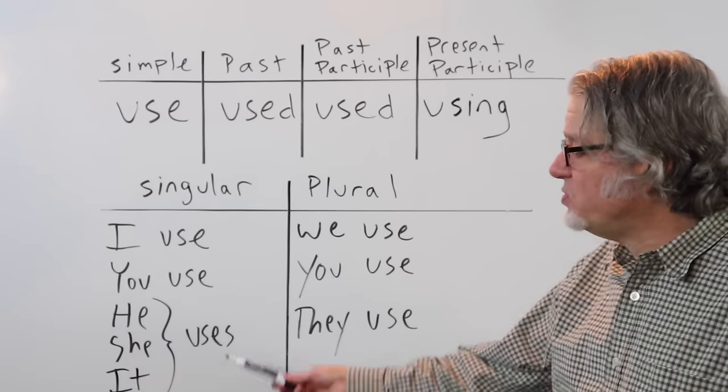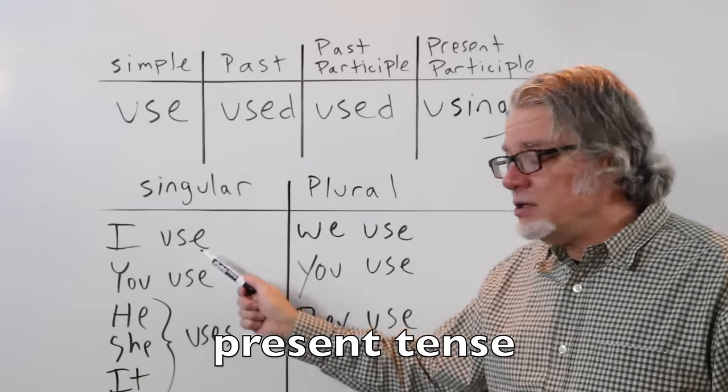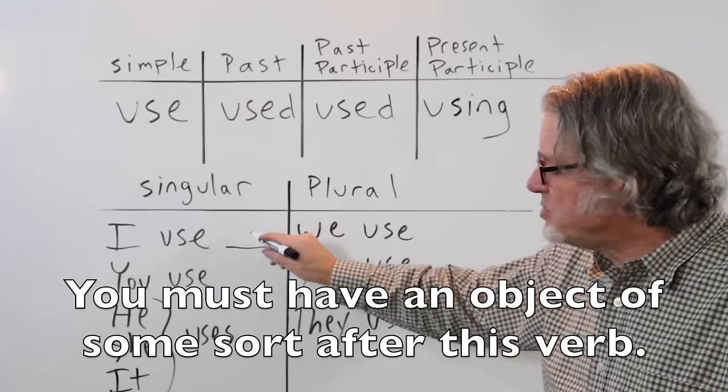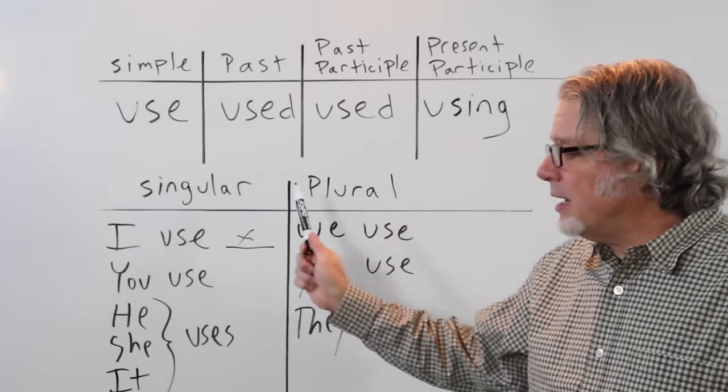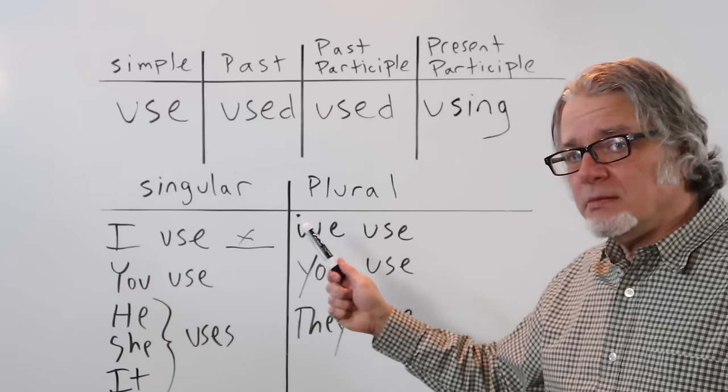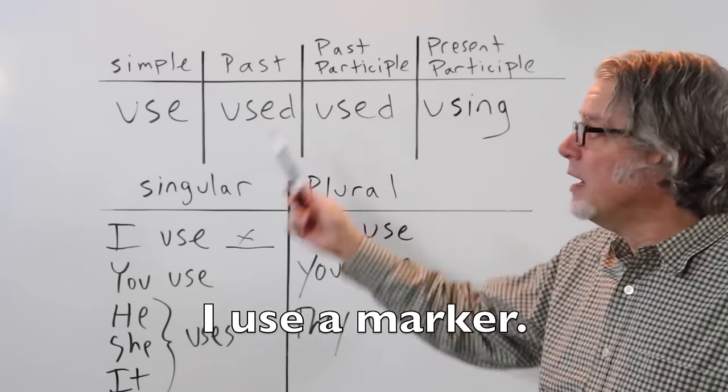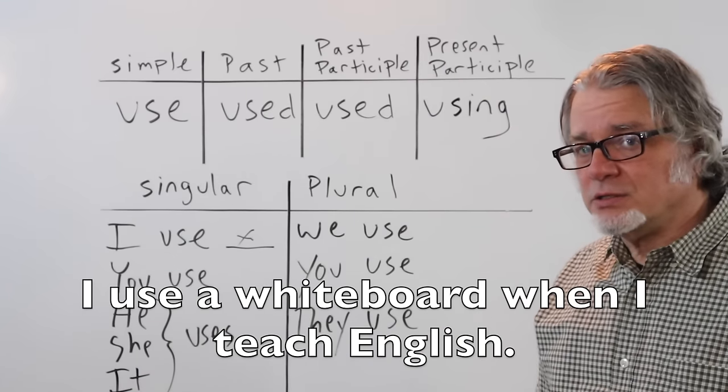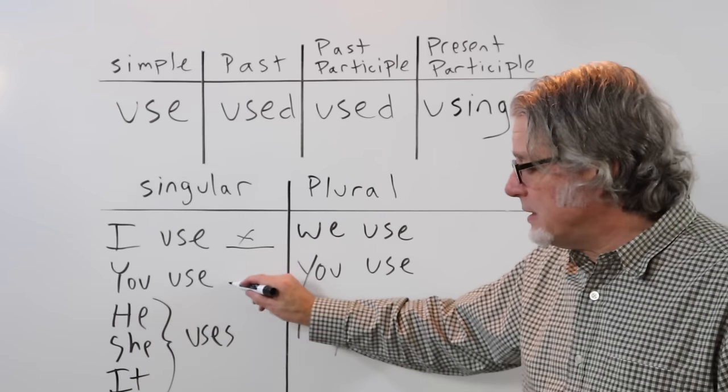Here's the verb use in the singular and plural. I use. And then you must have an object of some sort after this verb. I use. And then the thing. I use a marker. Or, I use a whiteboard when I teach English. You use. And then the object.